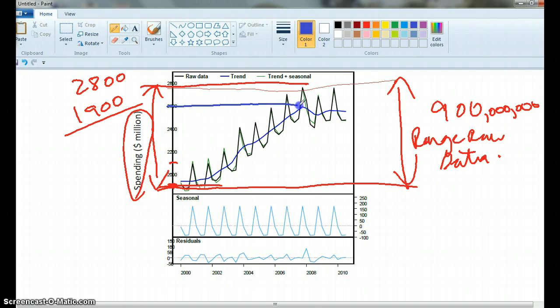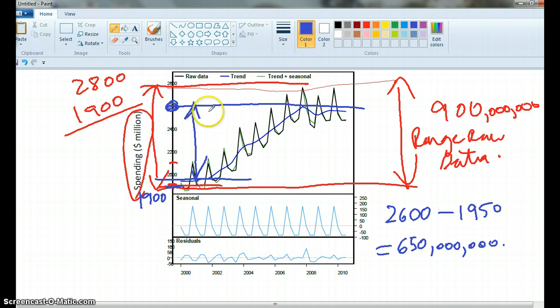Now let's have a look at the trend. So the range of the trend is this. So that's going from this here is 26. And so I've got 2600, minus, and I'm going to call that, if that here was 1900, what are we going to call it, 1950. So what's that? Can somebody tell me? Thank you. Did I hear 650? And again, it's actually millions. So the range of the trend is 650 million. And we're dividing that by the range of the raw data.